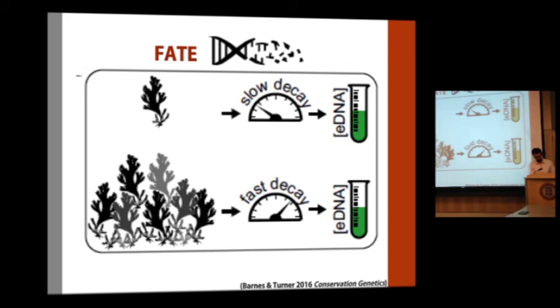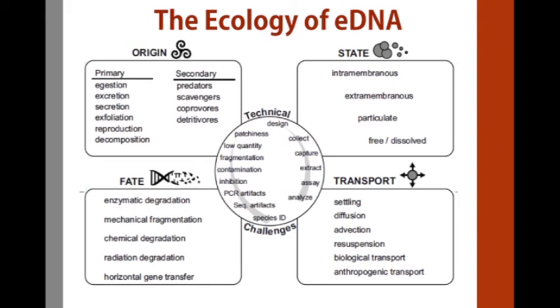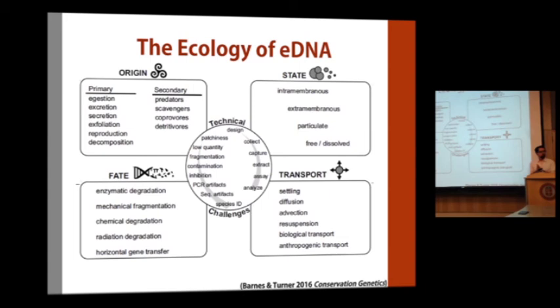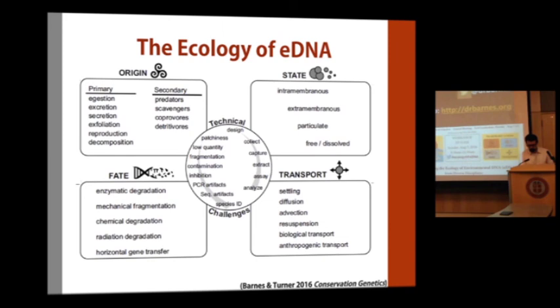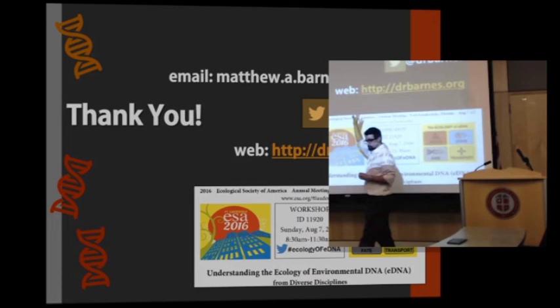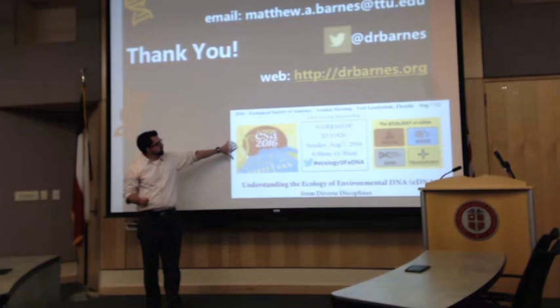When we put all of these together — the origin, state, transport, and fate of eDNA — we get the ecology of environmental DNA. Adding in some of the chemistry and technological limitations, we essentially have our genetic environmental eDNA research program. We've got a workshop coming up at the Ecological Society of America this summer on the ecology of environmental DNA, so please look out for that.